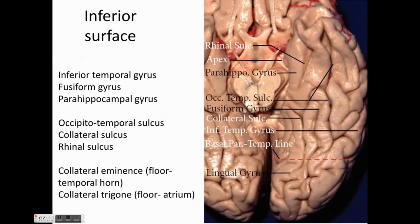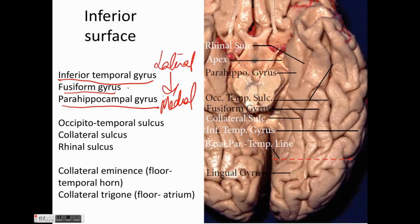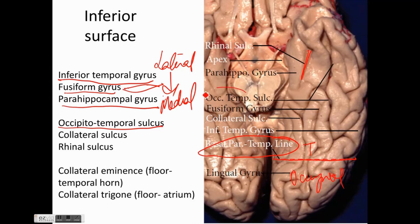Coming to the inferior surface, we have inferiorly the inferior temporal gyrus, above that the fusiform gyrus, and superiormost on the inferior surface we have the parahippocampal gyrus. So from lateral to medial: inferior temporal, fusiform gyrus, and parahippocampal gyrus. The sulcus separating the inferior temporal gyrus from the fusiform gyrus is the occipitotemporal sulcus, and the sulcus separating the fusiform gyrus from the parahippocampal gyrus is the collateral sulcus anteriorly, which is present as the rhinal sulcus. The fusiform gyrus is named so because of its fusiform shape.